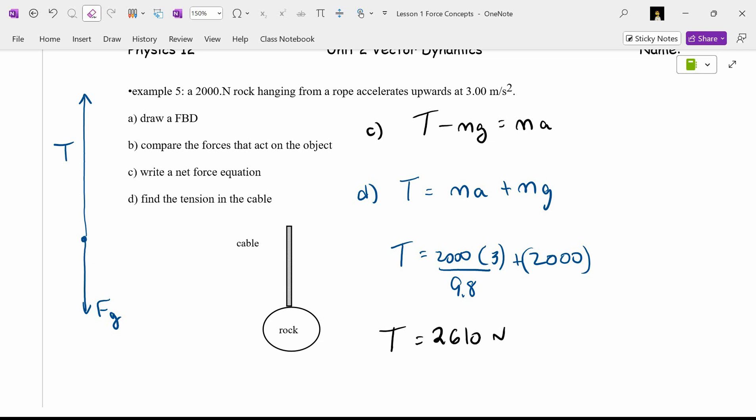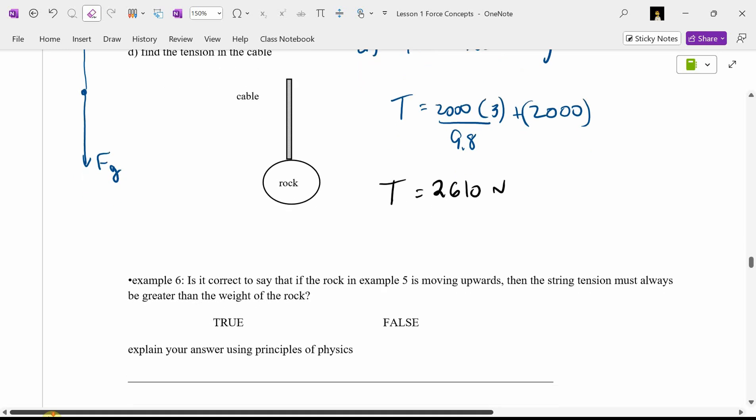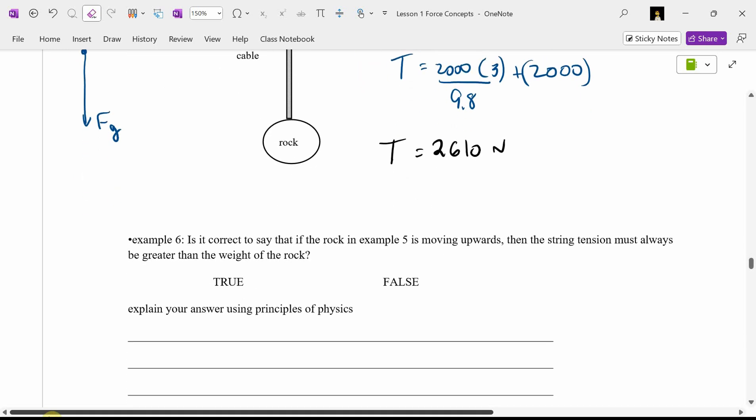This is interesting. We're going to vote. We got a true-false question. Is it correct to say that if the rock in example 5 is moving upwards, then the string tension must always be greater than the weight of the rock? The weight of the rock was 2,000. We got a tension of 2,610. If the rock is moving upwards, will the string tension always be greater than the weight of the rock? It's a good question. Who says, Mr. Duick? Yeah, I think that's true. If the rock is moving upwards, tension has to be bigger than the weight. I got 1, 2, 3, 4. Who says, I think that's false? 1, 2, 3, 4, 5, 6, 7, 8. Convince me.